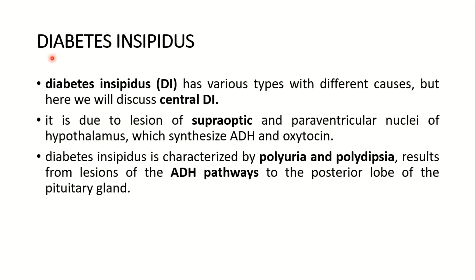The next disease resulting from lesion of the hypothalamic nuclei is diabetes insipidus (DI). Here we discuss central DI, or central diabetes insipidus, due to lesion of the supraoptic and paraventricular nuclei of the hypothalamus, which synthesize ADH (anti-diuretic hormone) and oxytocin. It is characterized by polyuria — excessive production of urine — and polydipsia — excessive thirst — resulting from lesion of the ADH pathways to the posterior lobe of the pituitary gland.